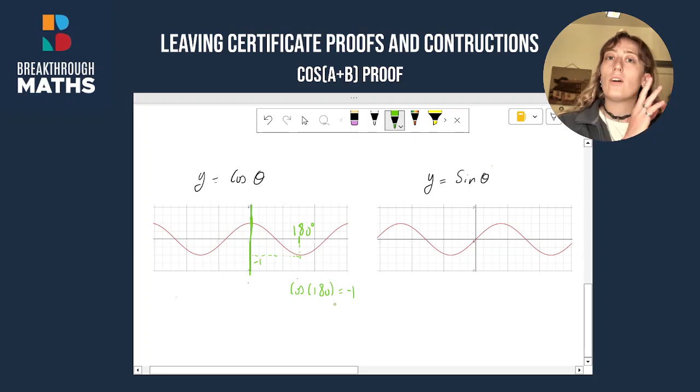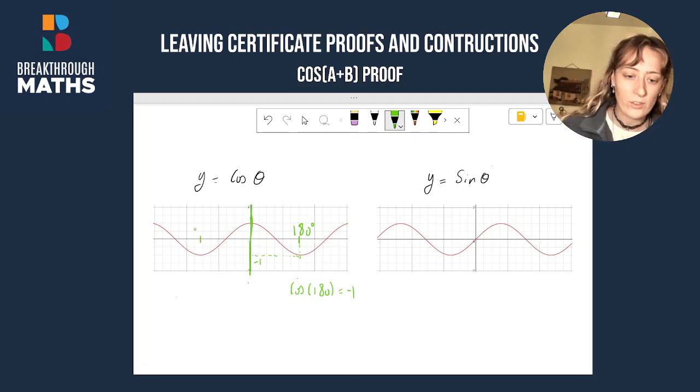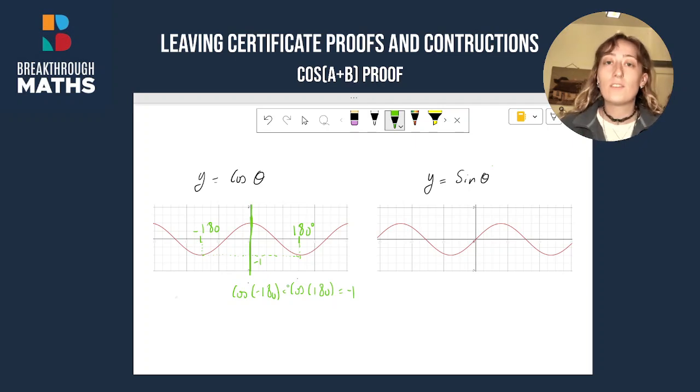But now, let's look at cos of minus 180 degrees. So minus 180 degrees is about here. And we do the same thing, dot, dot, dot, cross our y-axis. And again, we end up at minus one. So the cos of a negative angle is exactly equal to the cos of the positive of that angle because of this symmetry.